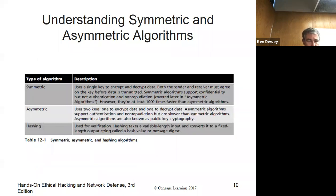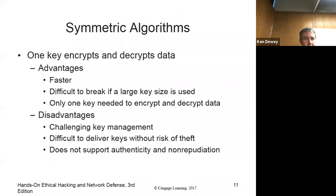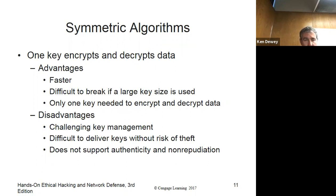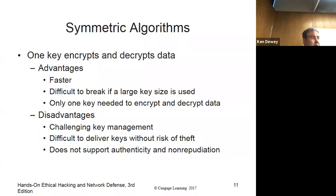They talk about symmetric, asymmetric, and hashing. Symmetric means the same key — symmetric starts with S, so it's the same key. It's very fast for encryption and decryption, and it's very popular today — AES is a symmetric encryption. It's faster and difficult to break with large-sized keys. The disadvantage is key management: you have to keep the key secret and never share it, because once the word gets out, people can use it to break the encryption.